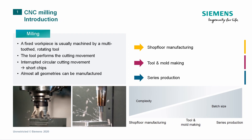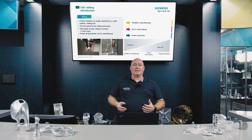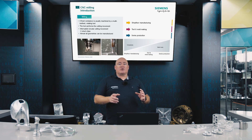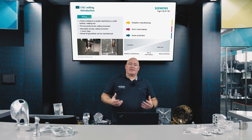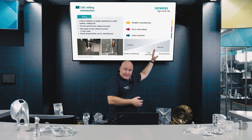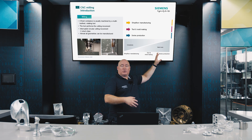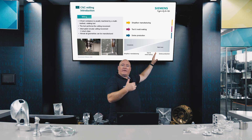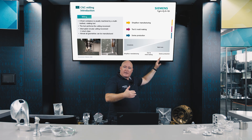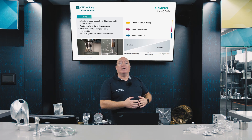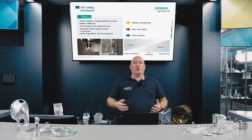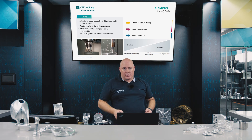As an introduction to CNC milling, here are the basics again. A tool performs the cutting movements, and almost all geometries can be manufactured by milling. To distinguish between individual process technologies, the slides are marked with colors: job shop production is yellow, mold and die making is red, and series production is blue. Slides without a color marking deal with general topics.